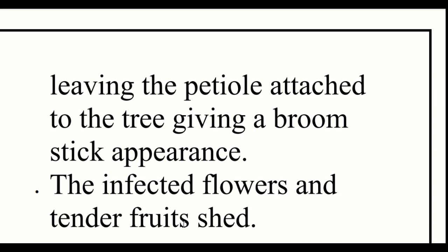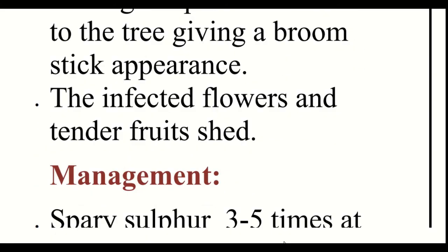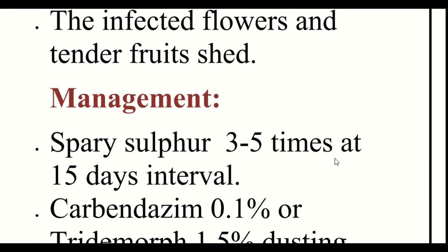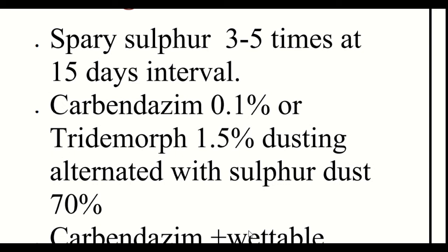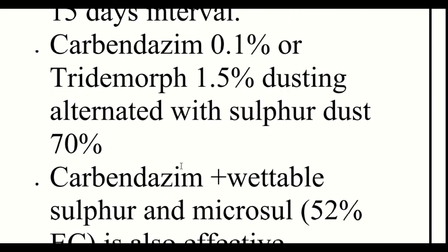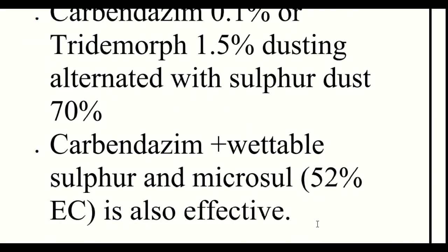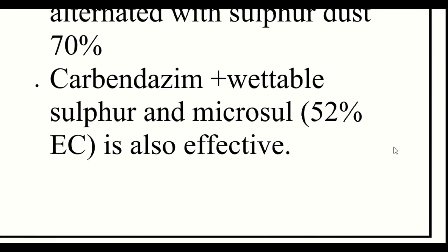The infected flowers and tender fruits shed. Management: spray sulfur 3 to 5 times at 15-day intervals; Carbendazim 0.1% or Tridemorph 1.5% dusting alternated with sulfur dust 70%; Carbendazim plus vegetable sulfur and micro-sulfur 52% is also effective.